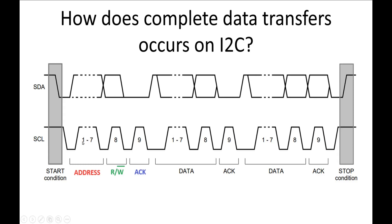That address is a 7-bit address, but as per I2C protocol we always send one byte at a time, and then the acknowledgement bit comes from the other side. The 8th bit indicates whether the master wants to write something into the slave or read something from the slave — this bit is called the read/write bit. Once this address and read/write bit is sent, the acknowledgement is sent by the slave.